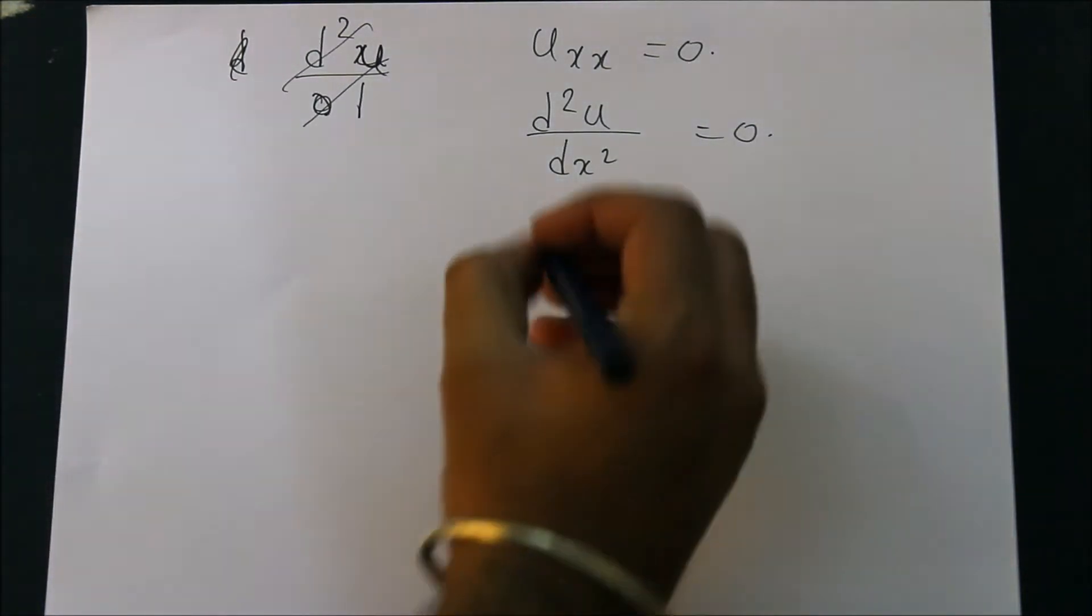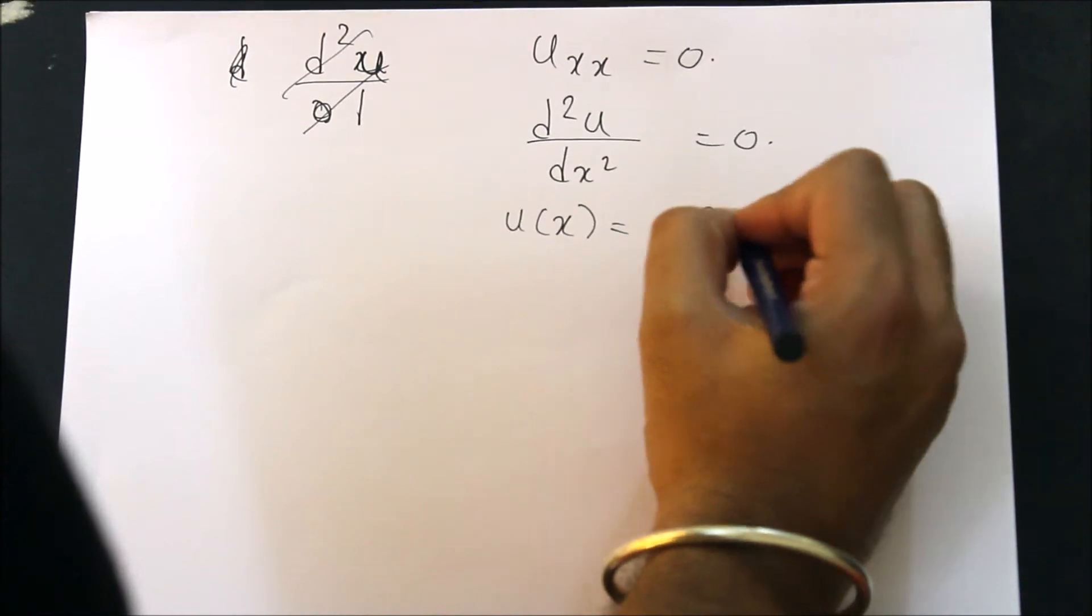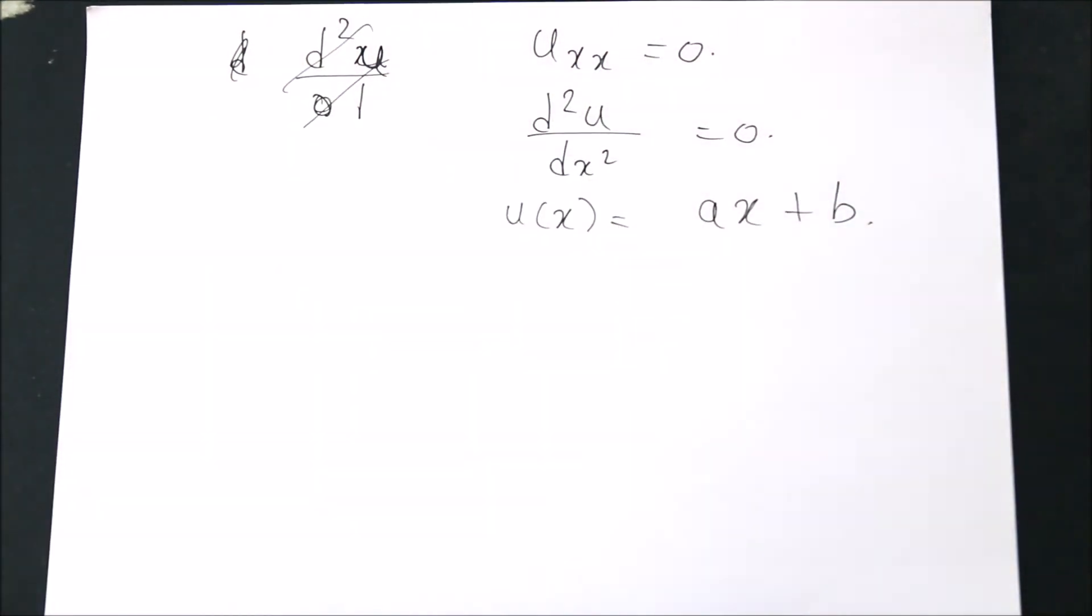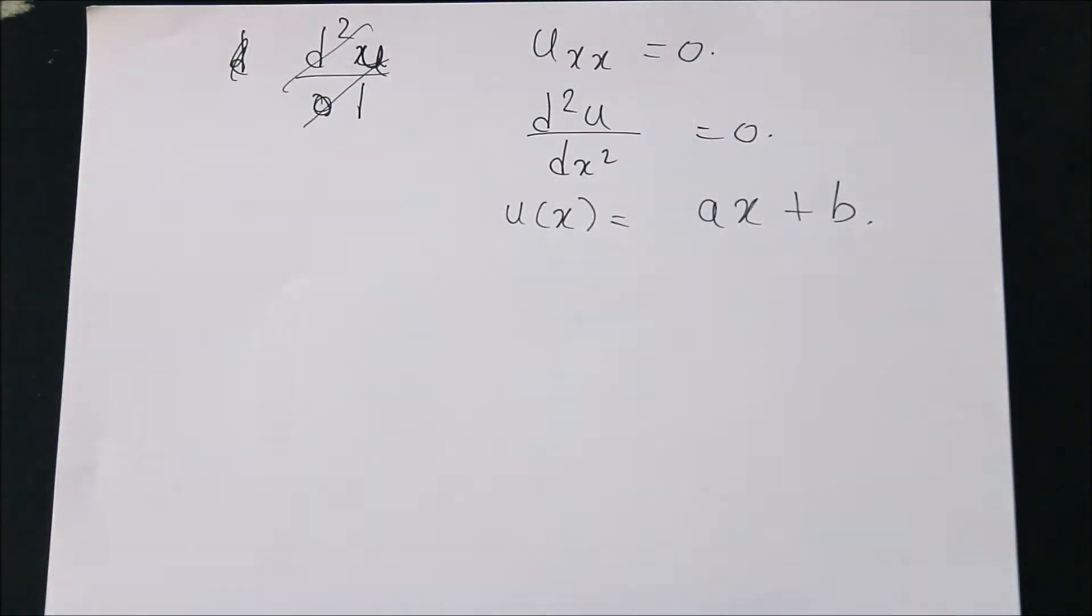If this is the scenario, what is my U of X? If I integrate twice, I get AX plus B.